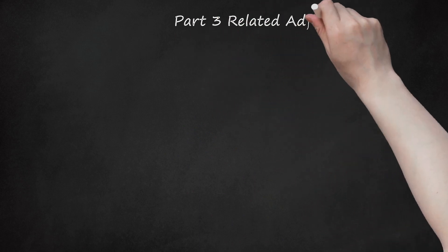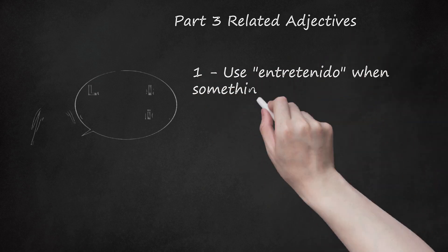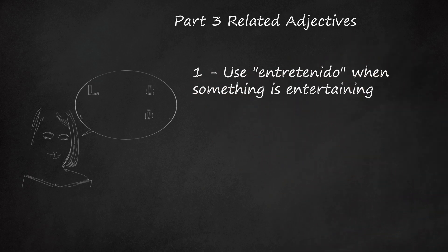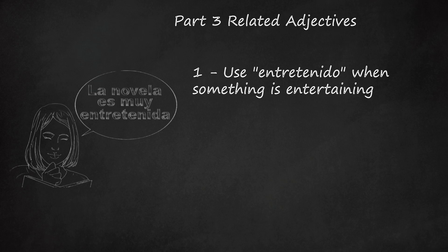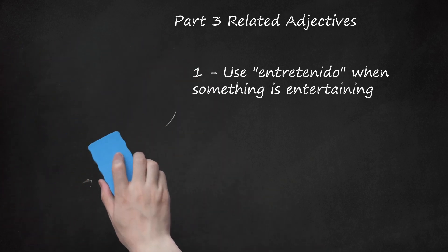Part 3: Related Adjectives. 1. Use 'entretenido' when something is entertaining. If you want to describe something that's both fun and entertaining, this adjective is an appropriate choice. Switch between 'entretenido' for masculine nouns and 'entretenida' for feminine nouns. Pronunciation: en-tre-te-ni-do or en-tre-te-ni-da. Example: 'La novela es muy entretenida' — The novel is very entertaining.